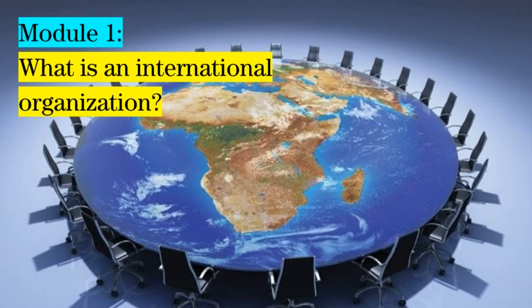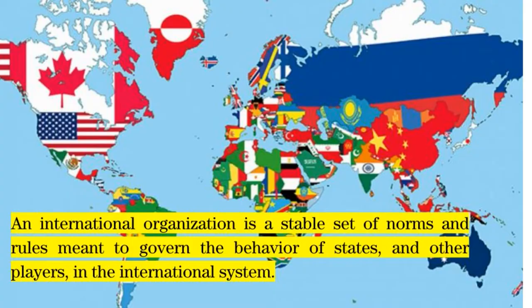States created international organizations to do things that they could not do on their own, or to prevent from happening things that were not in the state's interests. An international organization, also known as an international institution or intergovernmental organization, is a stable set of norms and rules meant to govern the behavior of states and other players in the international system.